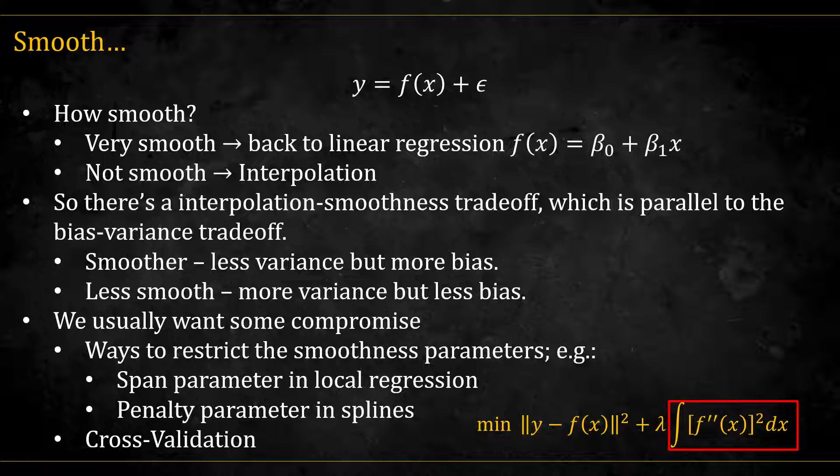which is summing the squared second derivative of the function, captures the wiggliness of the function, and we want to minimize that as well, meaning we want the function to be smooth. The exact balance is controlled by the smoothing parameter lambda. We use mostly cross-validation to determine the size of these smoothing parameters, though there are some more advanced tricks.